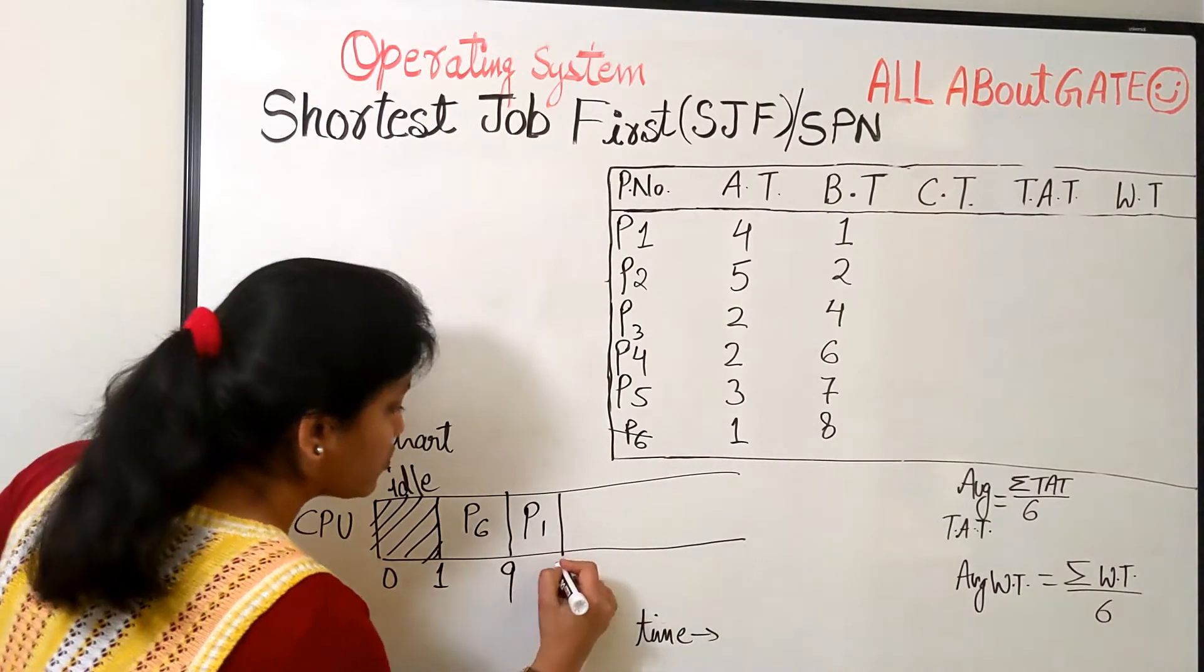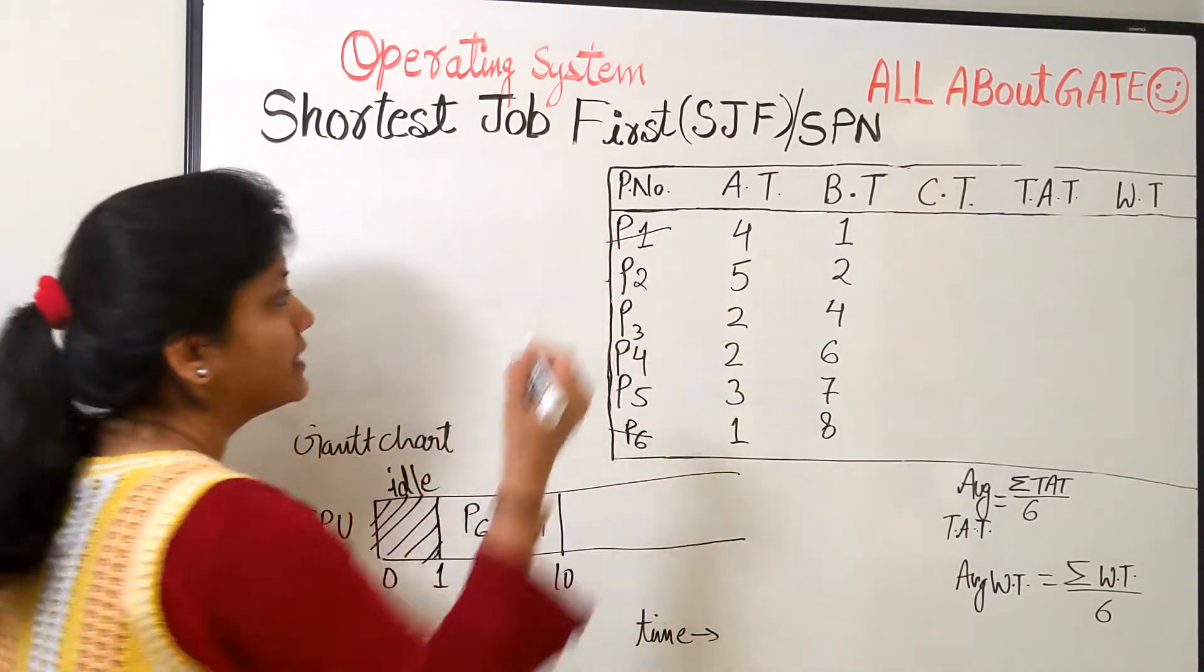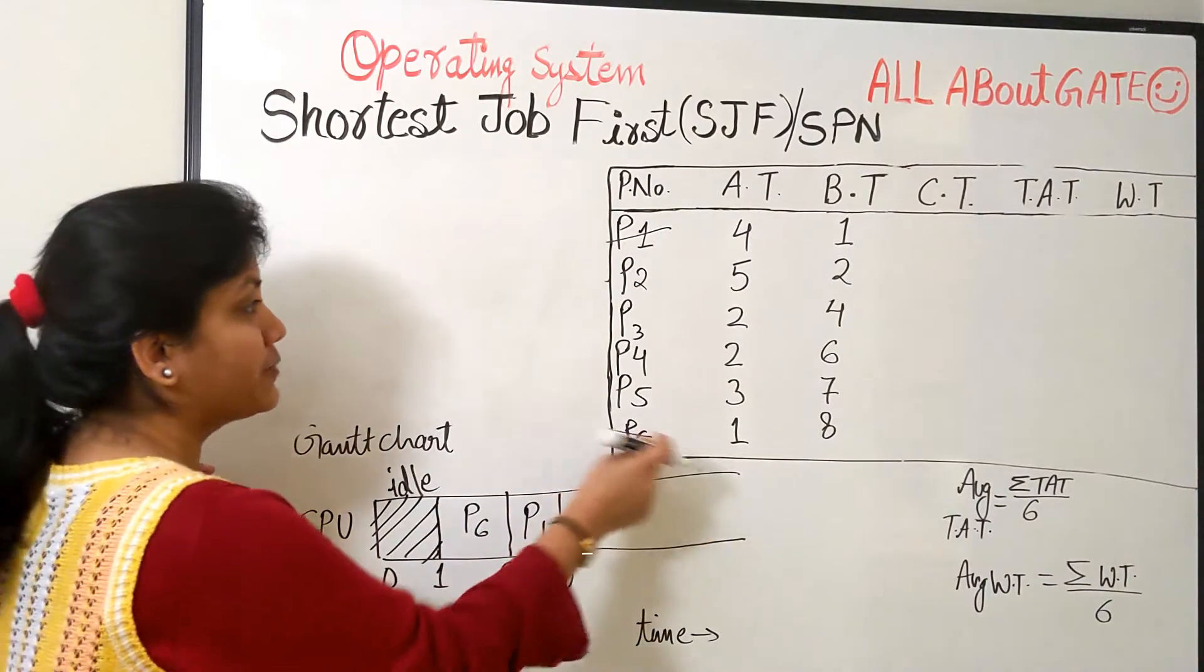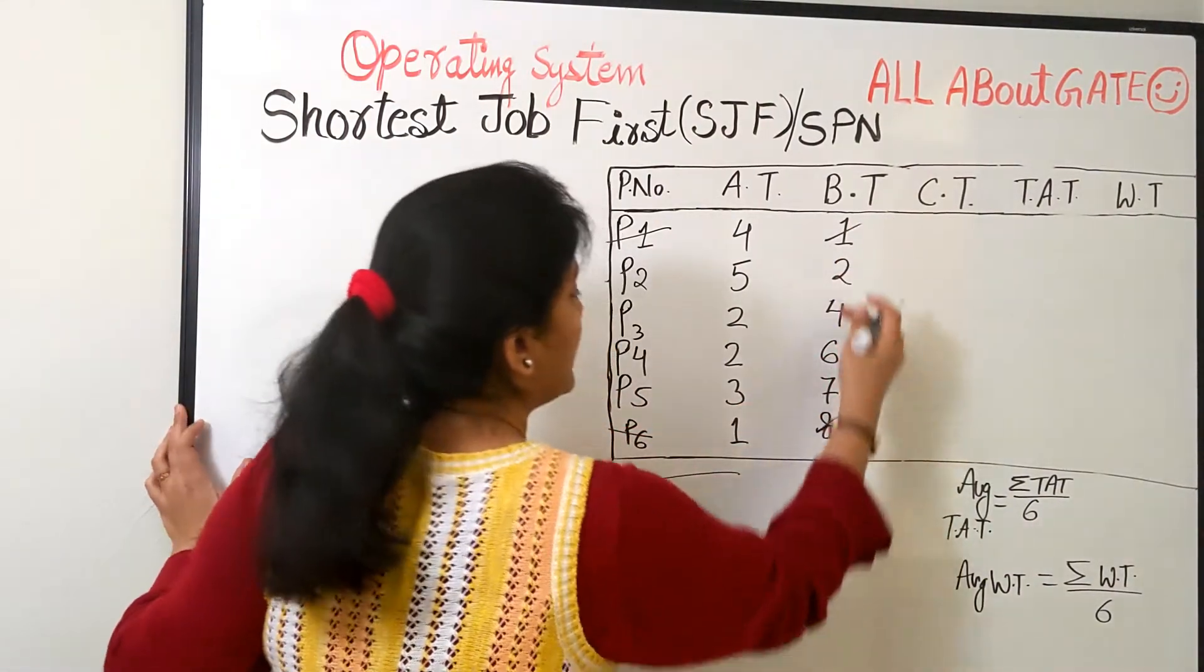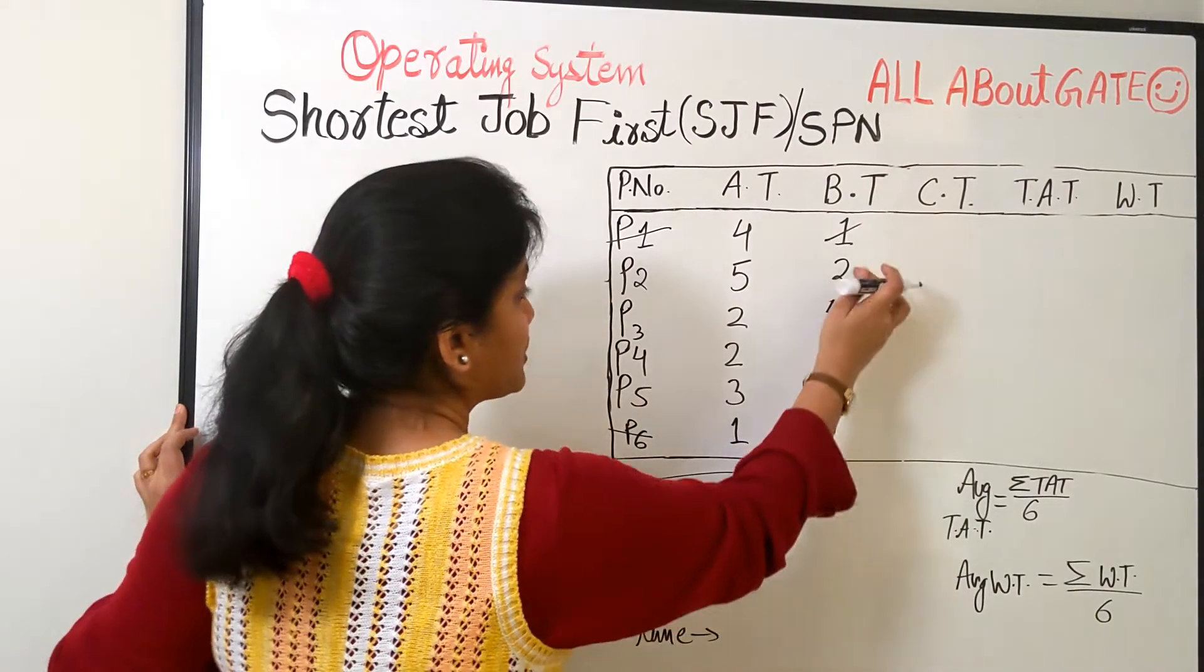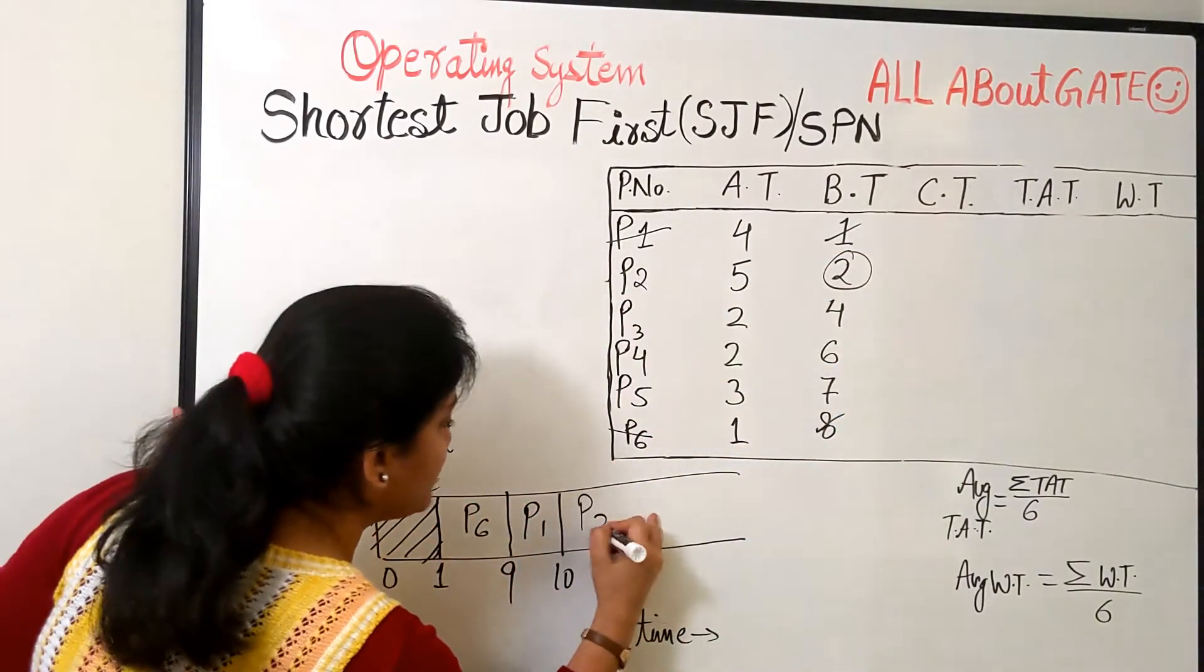P1 gets the chance first. Needs 1 burst. 9 plus 1, 10. And P1 is done. This cutting will help you. You will realize that these processes are simply done. Now, this is also done. This is also done. Now, from 2, 4, 6, 7, which is the smallest number? 2 is the smallest number. So let's take P2.